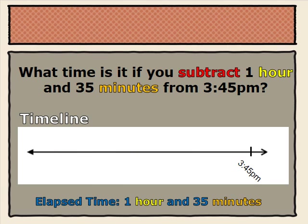What time is it if you subtract 1 hour and 35 minutes from 3:45 p.m.? We went ahead and put our end time, 3:45 p.m., on our timeline, and we'll gradually subtract the 1 hour and 35 minutes. First, we'll subtract the hours. So, we subtracted 1 hour from 3:45 p.m., giving us 2:45 p.m.